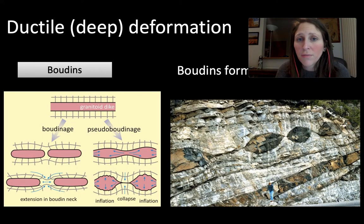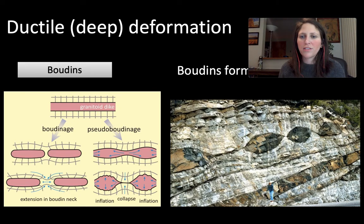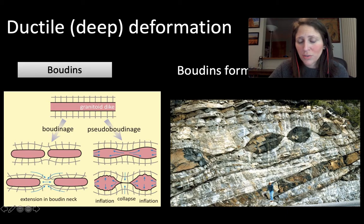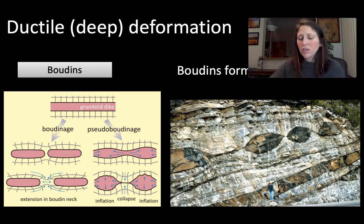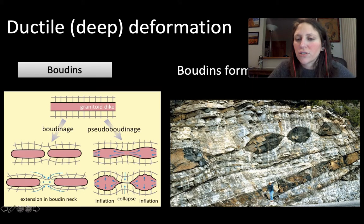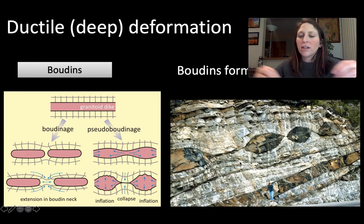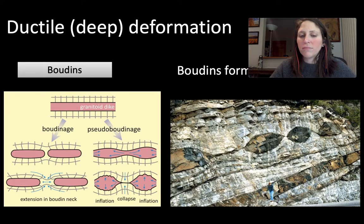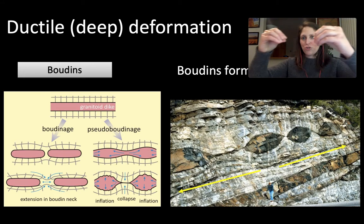A ductile structure you can get from stretching, elongation, or tension are things called boudins. Boudins is a German word for sausage — they look like sausage links. Boudins form when you have a horizontal layer and stretch it out so much that the layers start to separate from one another. You can see a tail in between these boudin structures, which represents the elongation and stretching of those strata.